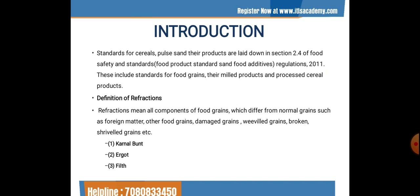Kernel bunt is a type of refraction which makes the cereal differ from normal cereals. The next refraction is ergot. In ergot, the grains of wheat show a slightly curved body in the ear in place of the kernel. Ergot is produced by a fungus and produces ergotoxin, and occurs in dry millets and wheat.